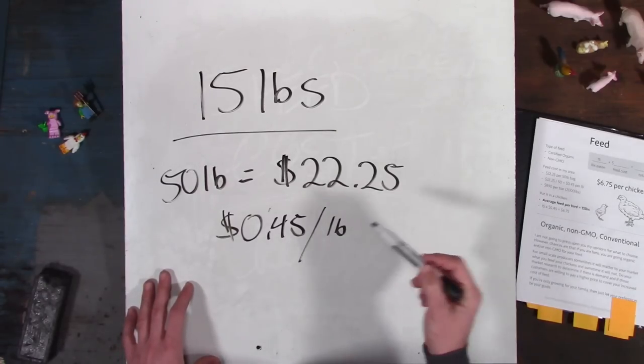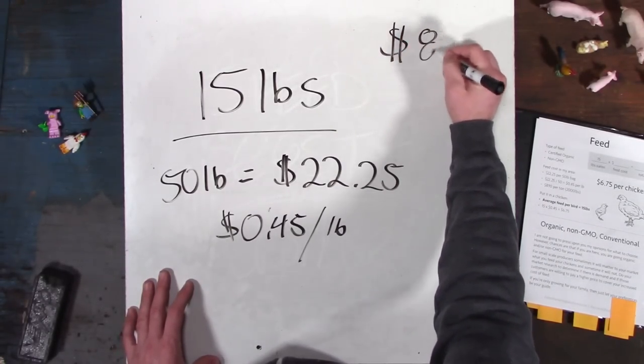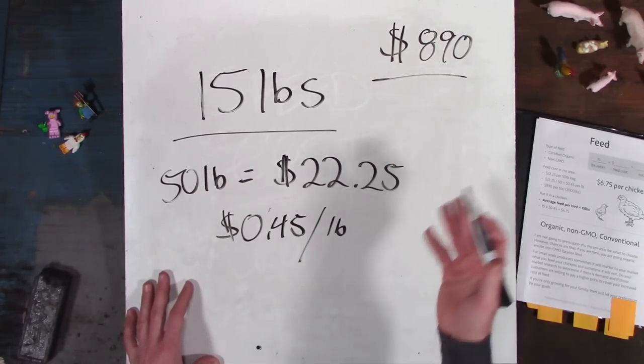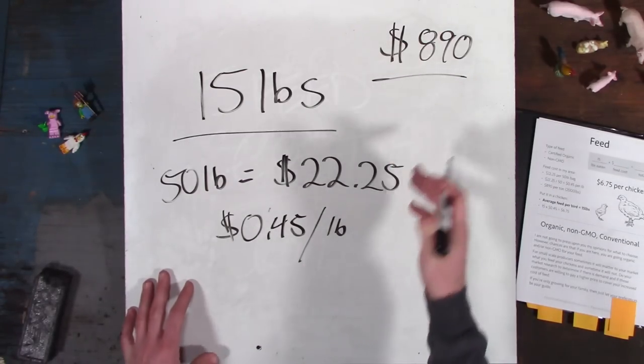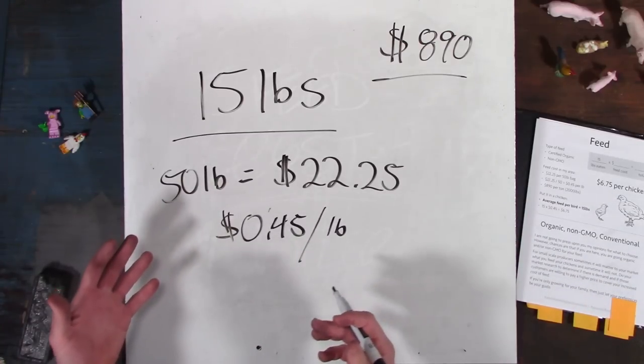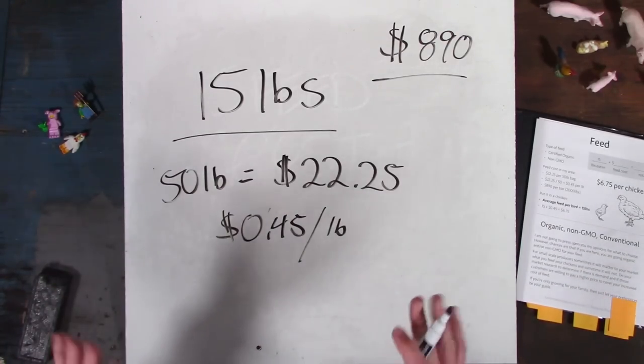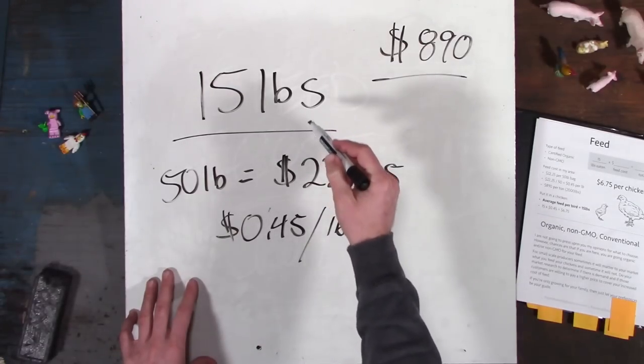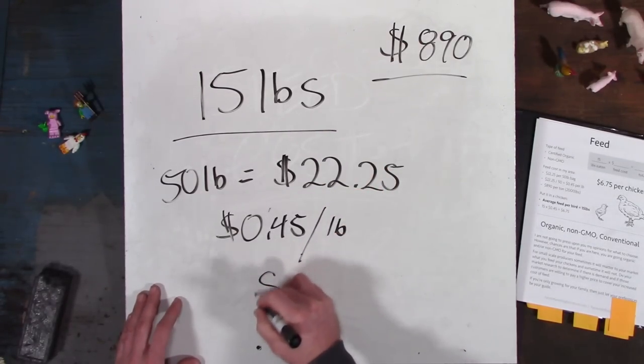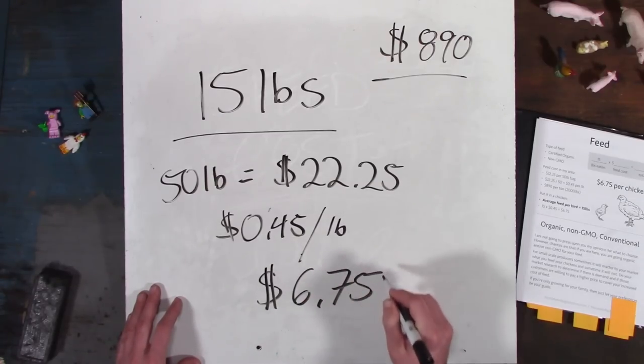So that works out, if anybody who's quick at math, that's roughly $890 per ton. I have to buy it by the ton. So that's part of my calculation. Then there's shipping costs and there's whether I want to go pick it up or if I want to get it shipped to me. I like getting it shipped to me because it's about the same cost as me going to pick it up unless I'm buying more. So 15 pounds per bird at 45 cents a pound, that gives us a total per bird feed cost of $6 and 75 cents.